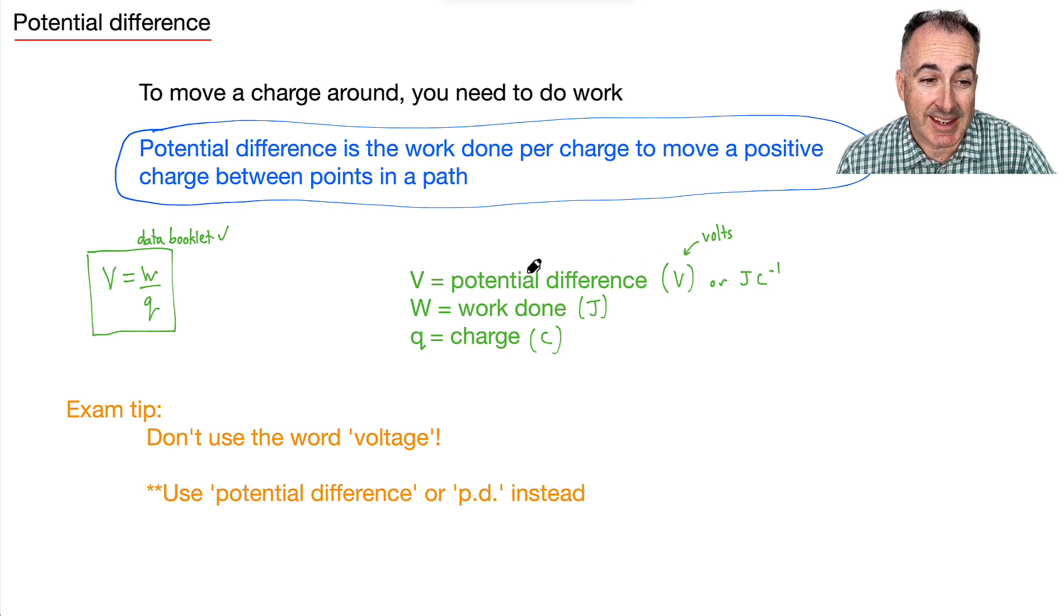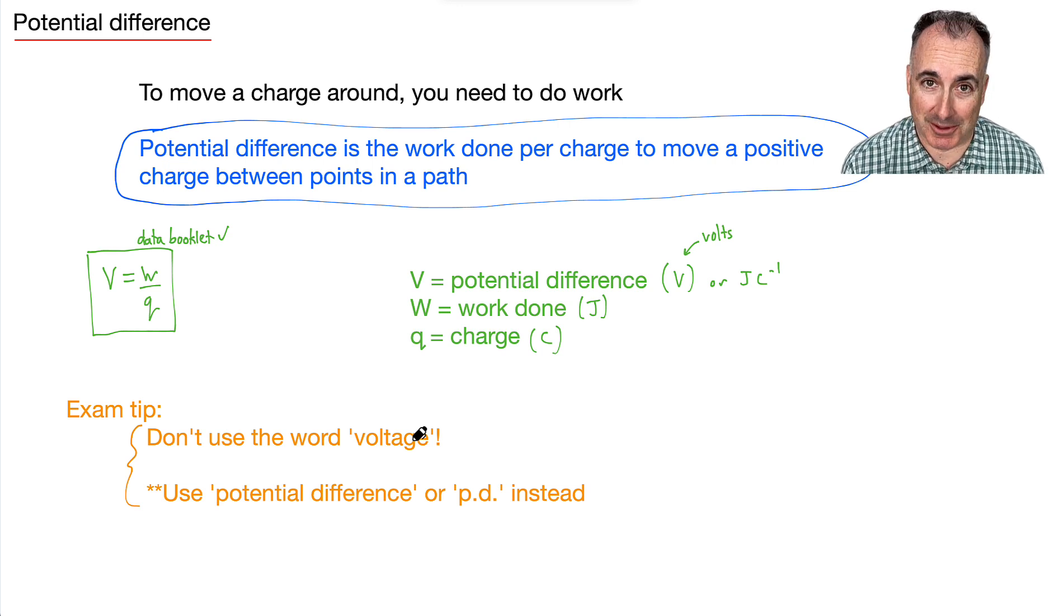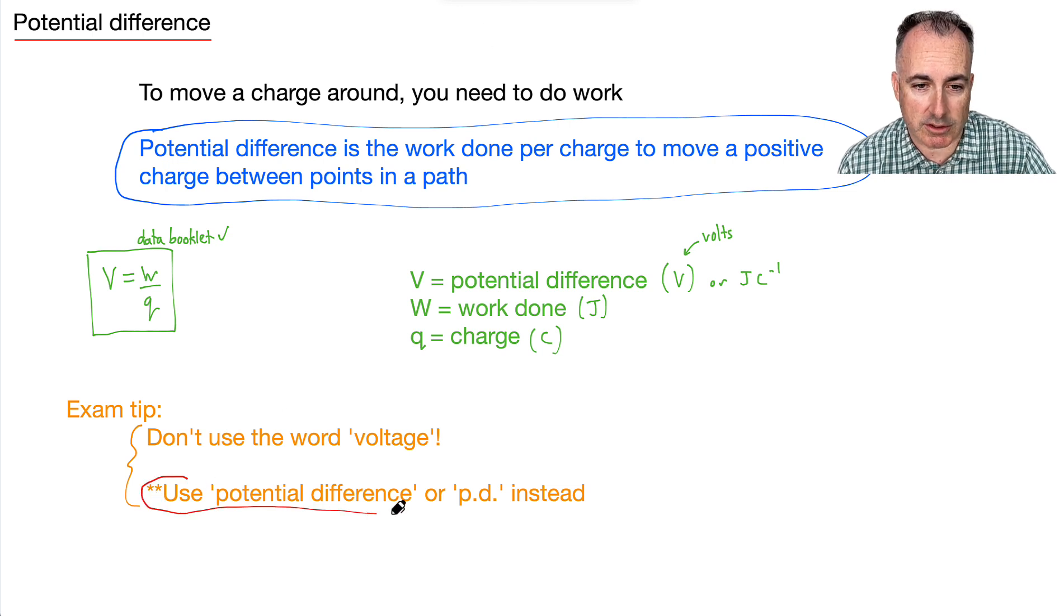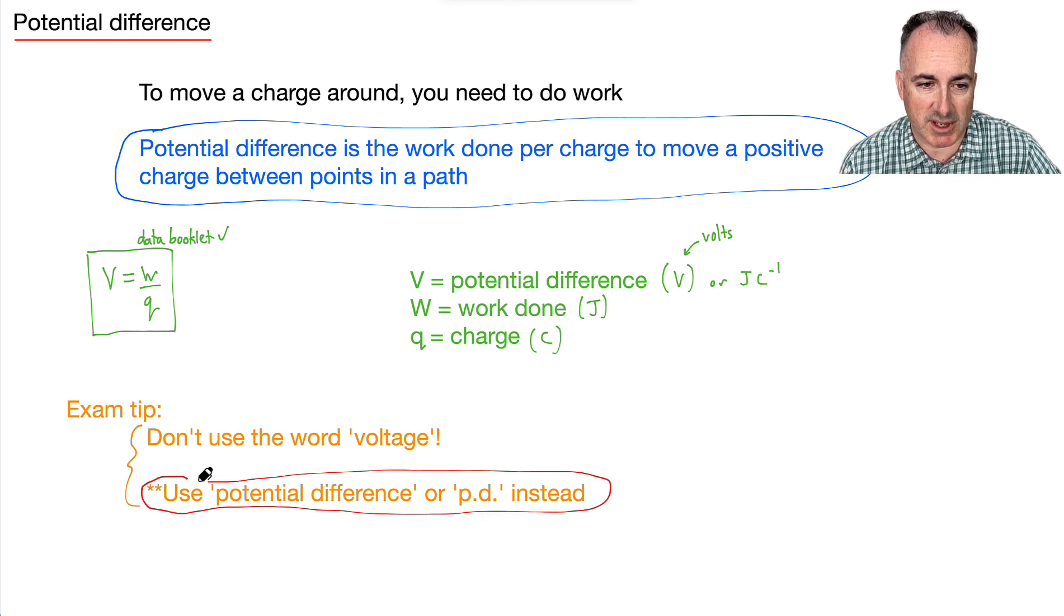We're going to be using volts. Now this is a really important piece right here, especially in the IB: don't use the word voltage. I know you're tempted to, but don't. It's better to use the word potential difference, or PD for short. This is instead. So we don't say the voltage equals W over Q. We're going to say the potential difference equals W over Q. This is going to be very important. We're going to be using what's called PD for short. We don't say voltage, even though it is measured in volts.